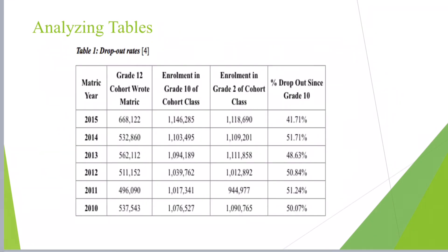Here we have the table, and we do the same thing. We start with the title and then list the variables. The variables here are: the years, enrollment per grade 12, the drop-out rate, the enrollment of grade 10, the enrollment in grade 2, and the percentage of drop-out since grade 10.